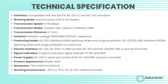Signal indication: three signal indication lights indicate TD, RD, and PWR. Power supply: RS-232 is serial port power; RS-422/RS-485 is power converter. Product appearance: plastic shell. Dimensions: 76mm length × 54mm breadth × 23mm height. Working environment: minus 20°C to 70°C and 5% to 95% relative humidity.